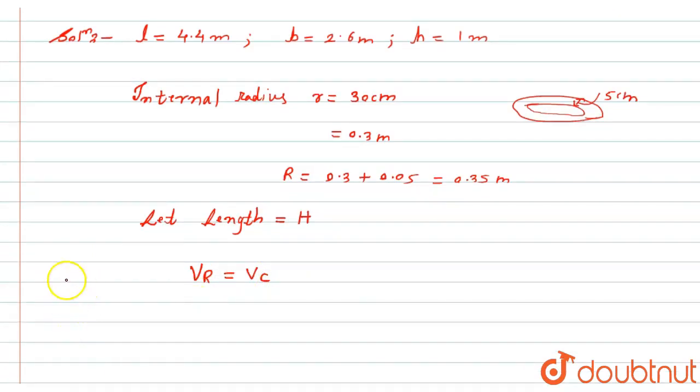Now I will simply use the formula. Volume for the rectangular block is length into breadth into height, which will equal volume of cylinder. As per the volume of cylinder, we have to form the outer volume of cylinder, and from that outer volume, I will minus the internal volume of cylinder.